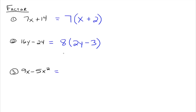We've got 9x and 5x squared. There's nothing common between 9 and 5, but notice that x is common to both of those terms. We could take an x out of both, and that would leave us 9 minus 5x. If you distribute the x through, you would have 9x minus 5x squared again.